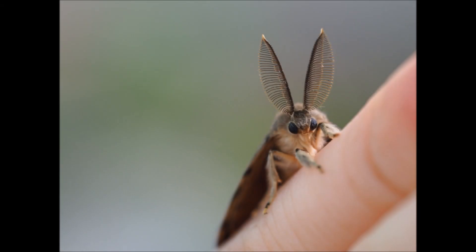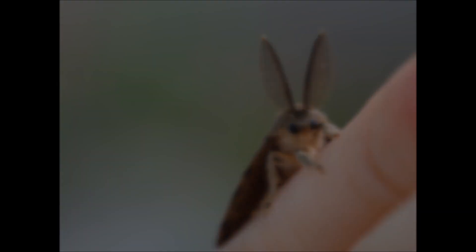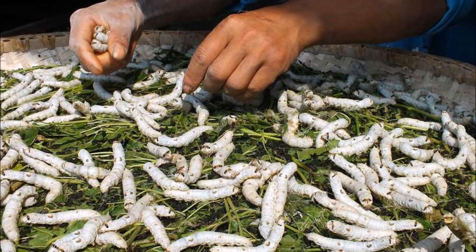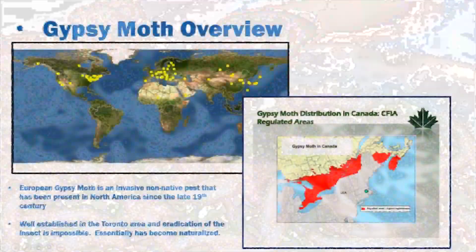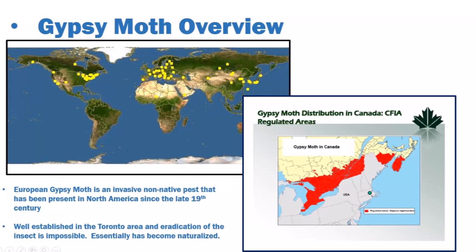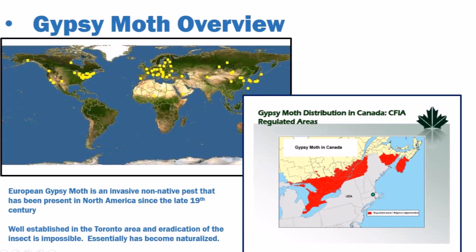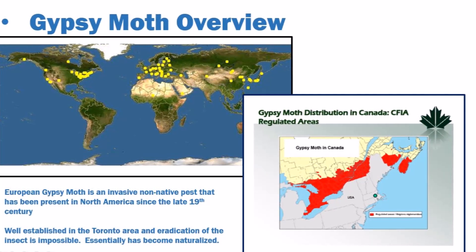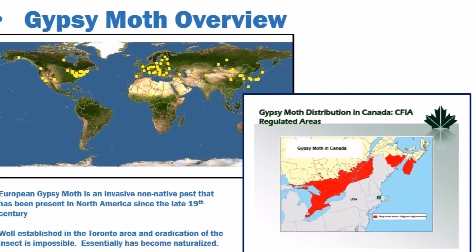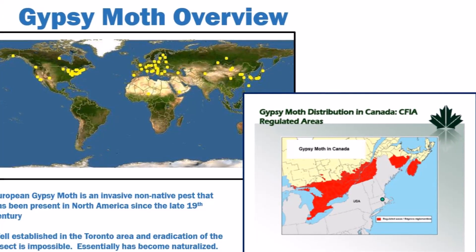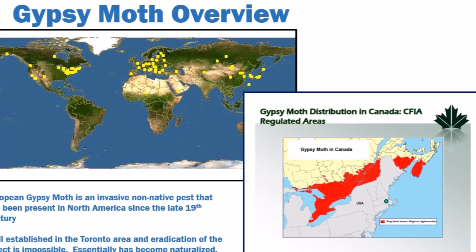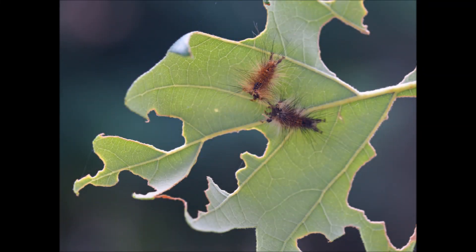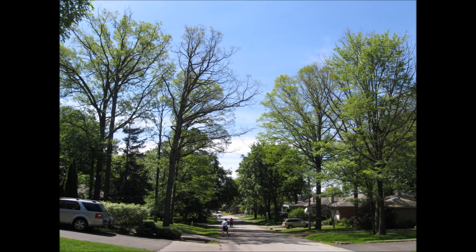The European Gypsy Moth is native to Europe and was originally brought over to North America around 1869 in an attempt to interbreed with silkworms and initiate a silkworm industry. The Gypsy Moth had other plans and quickly began to naturalize and move throughout eastern North America. Gypsy Moth is now well established in Toronto and parts of southern Ontario. Eradication is not feasible, but threshold levels can be kept in check with various control options. Gypsy Moth is a defoliator, meaning a leaf-eating pest, which feeds on a wide range of trees and shrub hosts, but prefers certain types of trees over others, especially oaks.